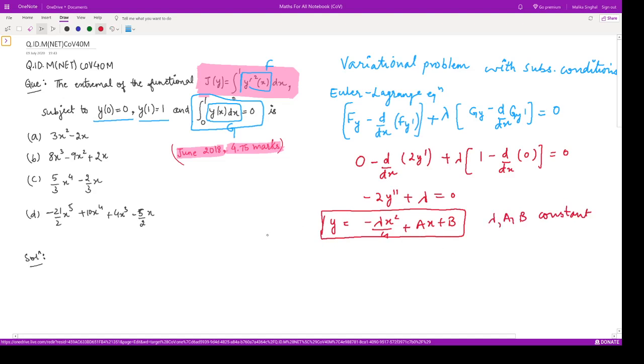Let us use our boundary conditions. We are given y(0) = 0 and y(1) = 1. Substituting y(0) = 0 gives B = 0 simply. And y(1) = 1 gives 1 = -λ/4 + A. So we can write A = 1 + λ/4.